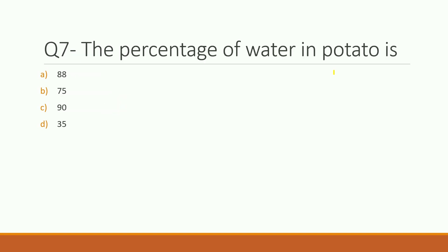Seventh question: the percentage of water in a potato is how much? Options are 88%, 75%, 90%, or 35%. The right answer is 75%. Potatoes contain about 75% water. Similarly, fruits like watermelon and cucumber contain around 90% water — many fruits and vegetables have high water content.